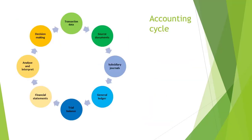The closing transfers are done after all transactions have been recorded in the general ledger. Firstly, a business will prepare a closing trial balance, and thereafter all closing transfers will be done. This means that we are currently moving from the processing phase on the accounting cycle to the output phase.